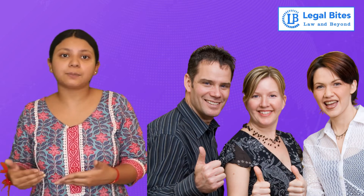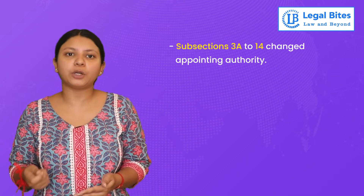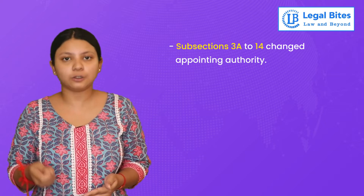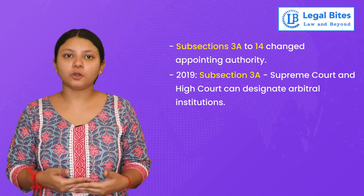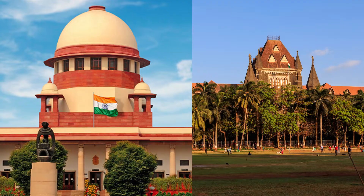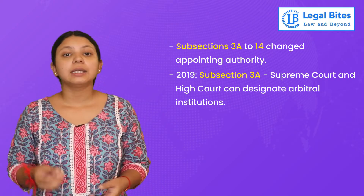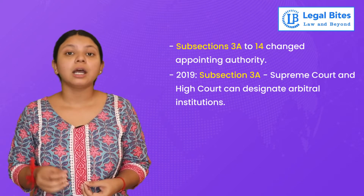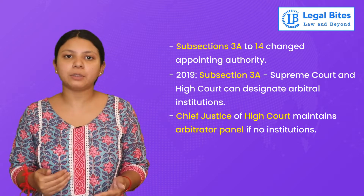In the provision there is no problem, but after these subsections — from subsection 3A to 14, which was in the 1996 Act regarding the appointing authority — it changed first in 2015, then in 2019. For example, after the 2019 amendment, subsection 3A was added, which states that the Supreme Court and High Court have the power to designate arbitral institutions. There is also a proviso that in respect of High Court jurisdictions, if there are no arbitral institutions, then the Chief Justice of the High Court will maintain a panel of arbitrators to discharge the functions and duties of arbitral institutions.